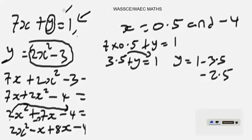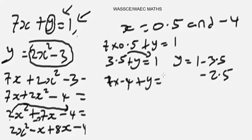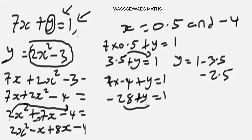When x = -4, substituting into 7x + y = 1: 7 × (-4) = -28, so -28 + y = 1, which gives y = 1 + 28 = 29. So when x = -4, y = 29.